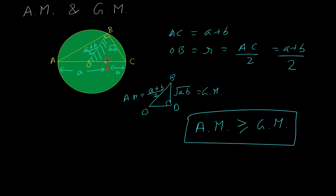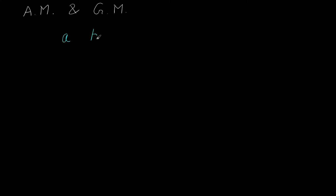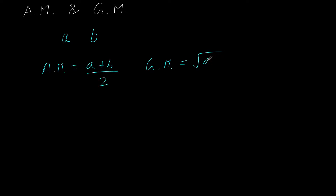Feel free to rewind the lecture and follow the steps from the beginning. We have now concluded the AM-GM relationship geometrically. In our next steps we will also conclude this algebraically. For two positive numbers A and B, the arithmetic mean is (A + B)/2 and the geometric mean is √(AB).